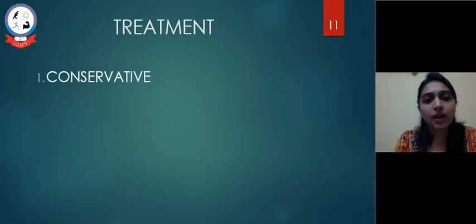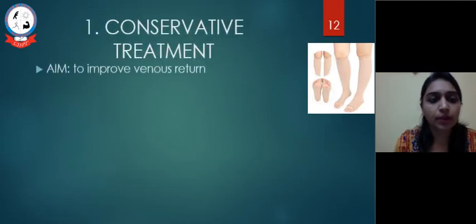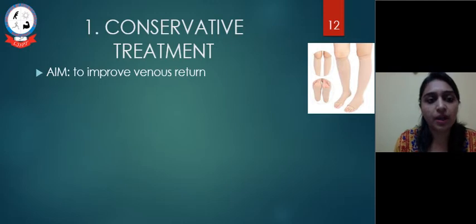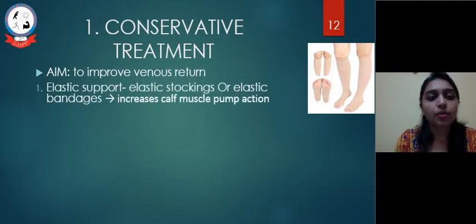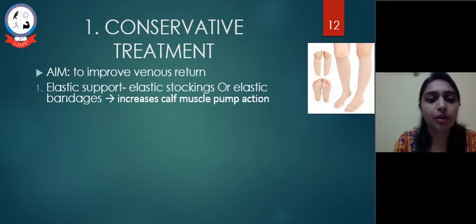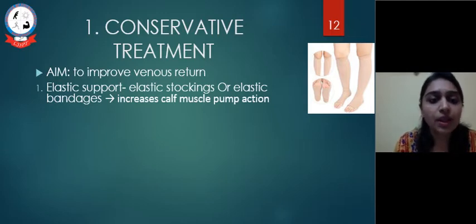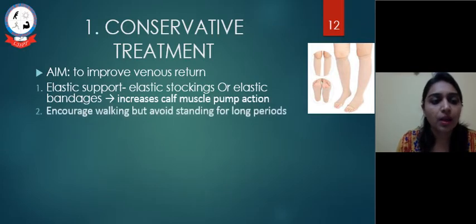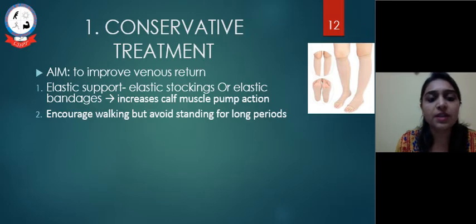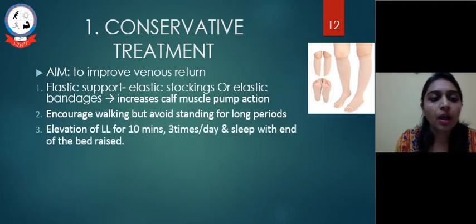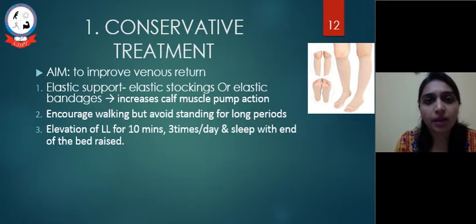Treatment can be divided into conservative or surgical. The aim of conservative treatment is to improve venous return. It includes the use of elastic stockings or elastic bandage worn throughout the day, especially when walking or standing, which increases calf muscle pump action. Walking is encouraged but standing for long periods is avoided. Elevation of the lower limb for 10 minutes 3 times a day and sleeping with the end of the bed raised is advised to help venous return.